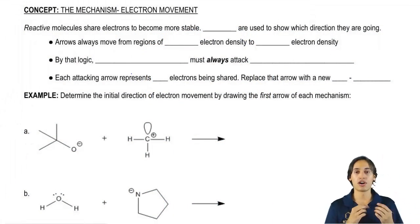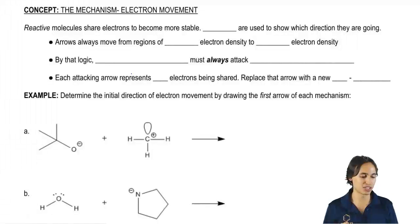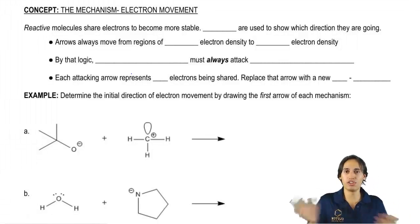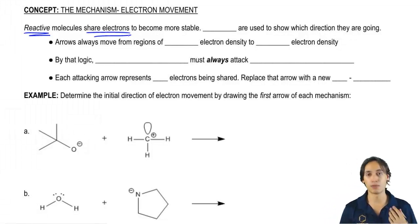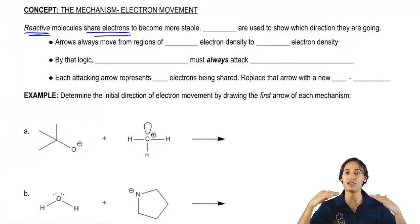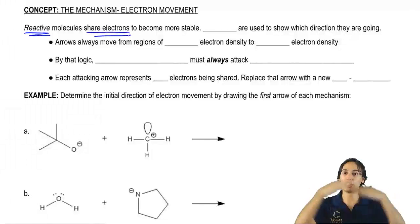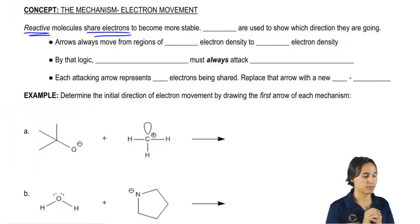So reactive molecules are the ones that are going to try to do something about their reactivity. So what that means is if you're a non-reactive molecule, you're inert, you don't care. But if you're reactive, you're going to try to share electrons with another molecule in order to become more stable. Remember that we talked about that in the first chapter, how we form molecular orbitals in order to reach a lower energy state.